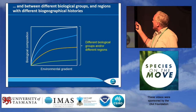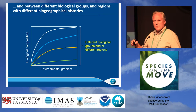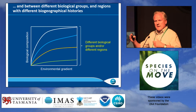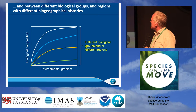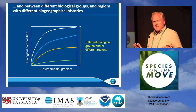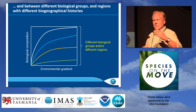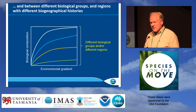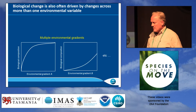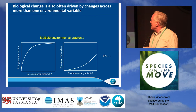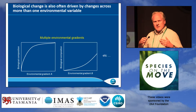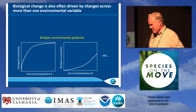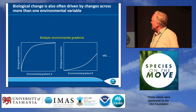It also matters what biological group you're thinking about and what the dispersal ability of that group is, and therefore how rapidly species replace each other as you move along an environmental gradient. It also matters what region you're in and what the biogeographic history of that region is — whether it's been stable climatically for long periods, giving relatively narrow niches and high niche packing, or very unstable, giving wider niches. And you will rarely have a situation where change in the biota is determined purely by one environmental gradient; there are normally several gradients driving biological change.